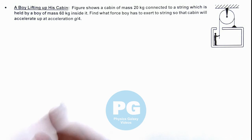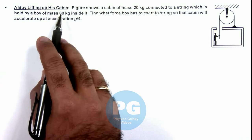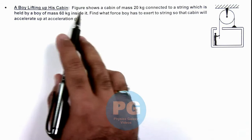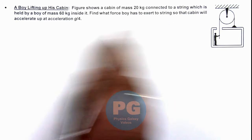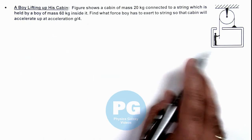This illustration is about a boy who is lifting up his cabin. Here the figure shows a cabin of mass 20 kilogram connected to a string which is held by a boy of mass 60 kilogram inside it.